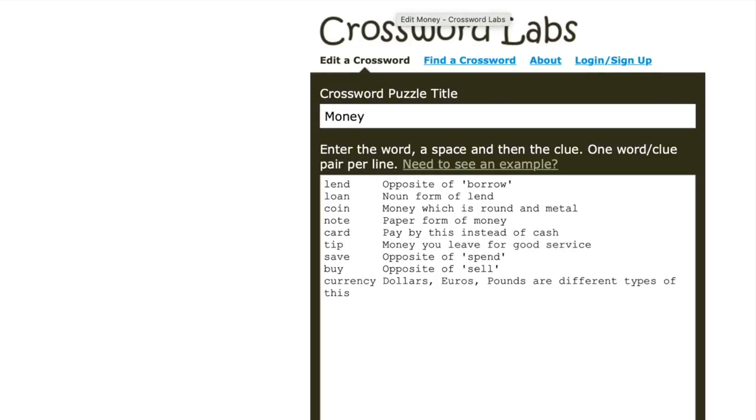One site I used for this one was called Crossword Labs. Very straightforward: you type in the title of the crossword, so the title of my crossword is 'money,' you type in the word, then you type in the clue, and then it automatically turns it into the crossword for you.